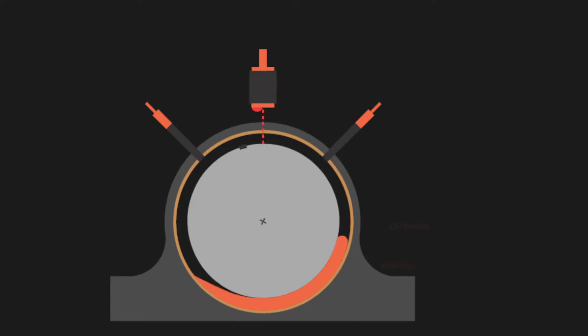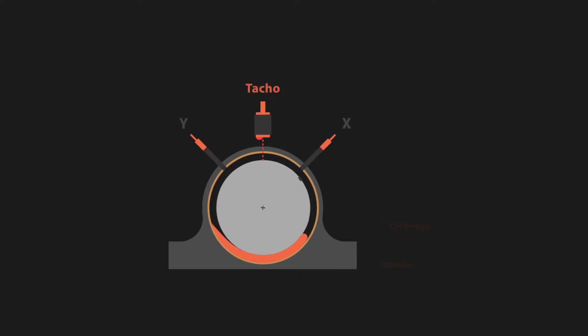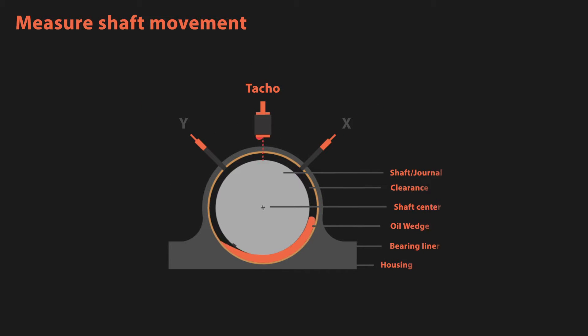So how do we obtain this data? The basic measurement setup for orbit analysis consists of a pair of proximity probes, a TAHO sensor, a data acquisition system, orbit analysis software, and of course a computer.